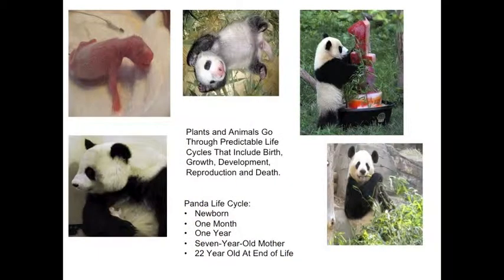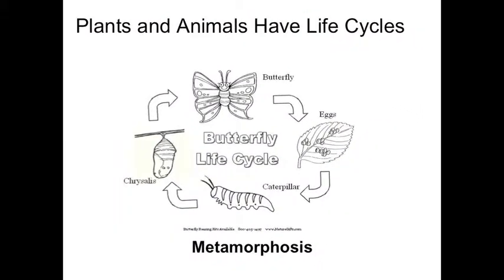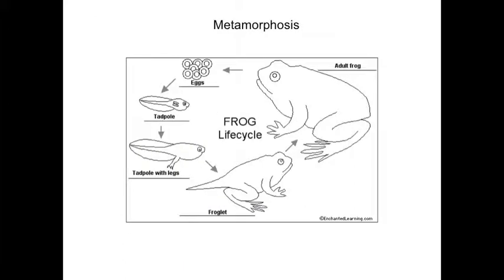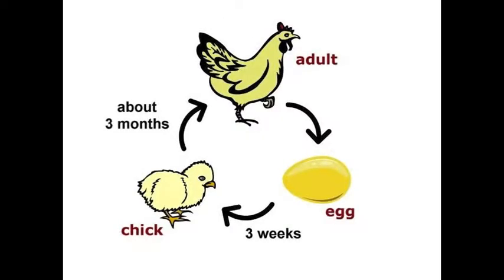Animals have life cycles. This is the life cycle of the panda bear. The butterfly's life cycle. The frog's life cycle. And the chicken's life cycle.